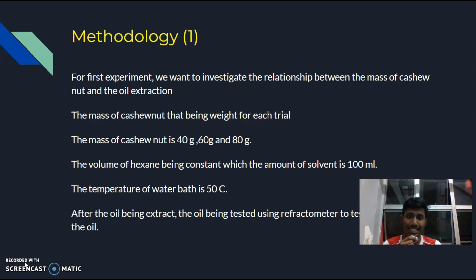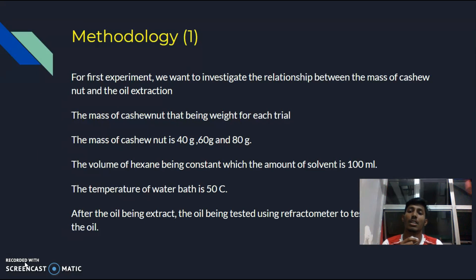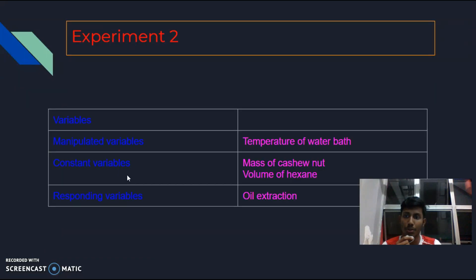The masses of cashew nut used are 40 grams, 60 grams, and additional values. The oil is tested using a refractometer to test the purity. For experiment two, the manipulated variable is the temperature of the water bath. The constant variables are the mass of cashew nut and the volume of solvent. The responding variable is oil extraction.